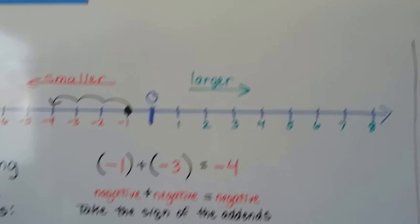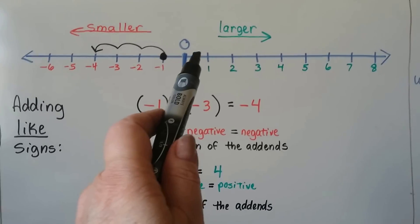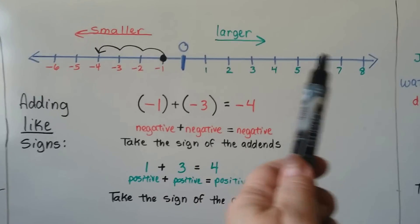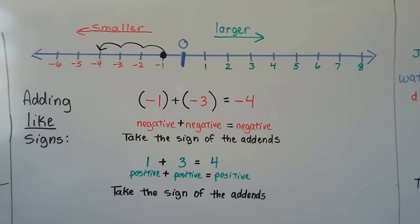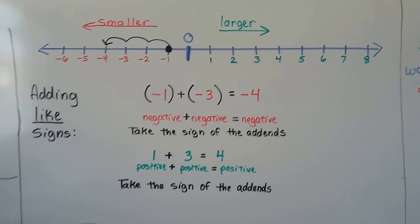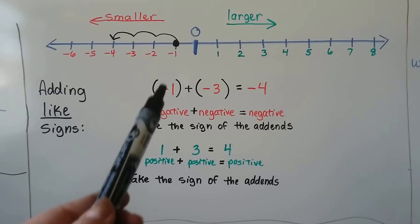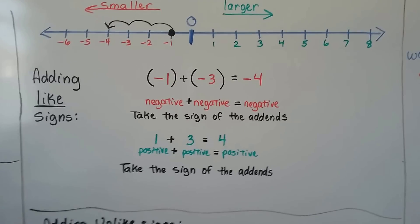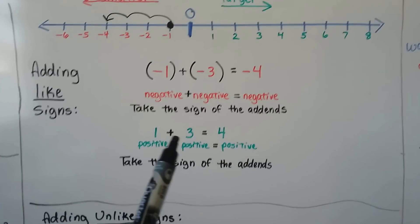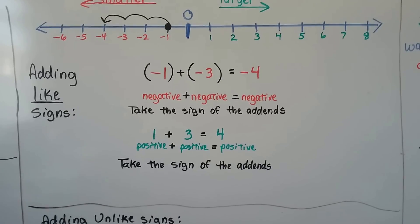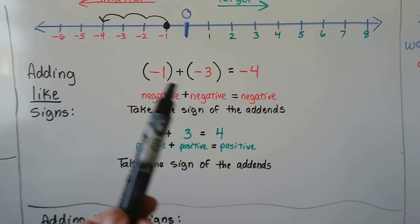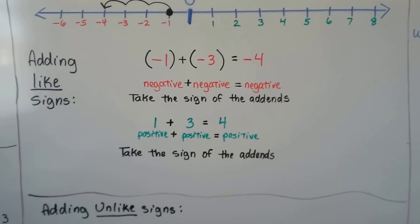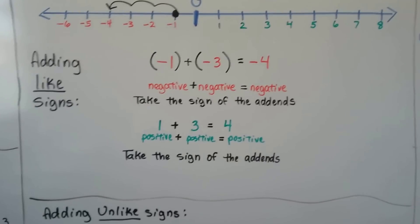When we look at a number line, we can see what's going on. When we get into the negatives we're going smaller, and the farther we go to the right, we get larger in the positive numbers. When we add like signs — a negative plus a negative — the answer is going to be negative. If we have a positive plus a positive, the answer is going to be positive. We just take the sign of the addends because they're like.